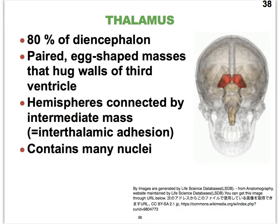Of the three subparts of the diencephalon — the thalamus, hypothalamus, and epithalamus — the thalamus is the largest, making up about 80% of the diencephalon. Everything is bilaterally symmetrical, so we see these two egg shapes in this frontal view. This is a three-dimensional image; if you copy this link you can rotate it. The two egg-shaped hemispheres of the thalamus are interconnected by that interthalamic adhesion, also called the intermediate mass.